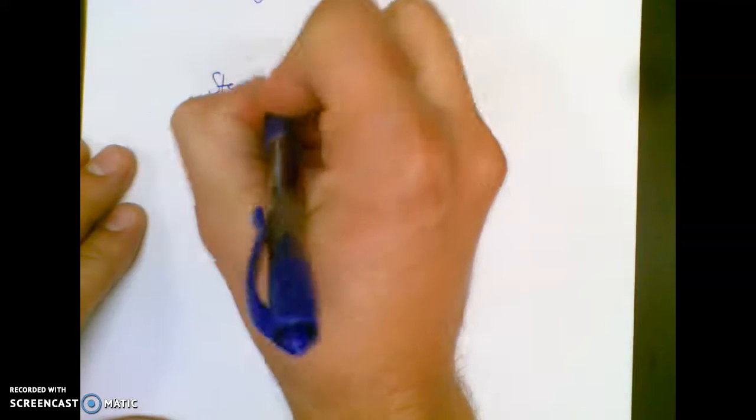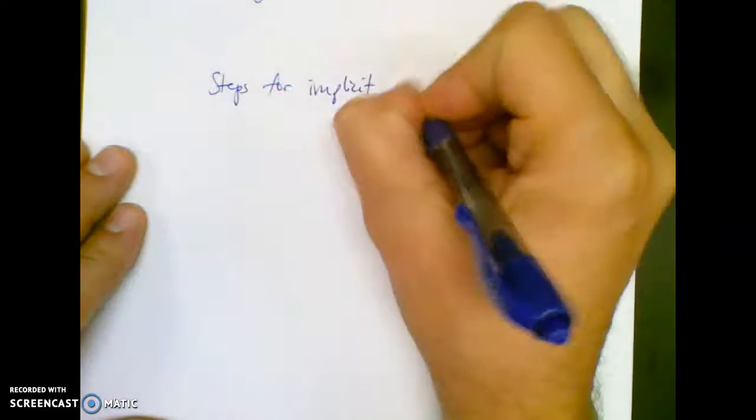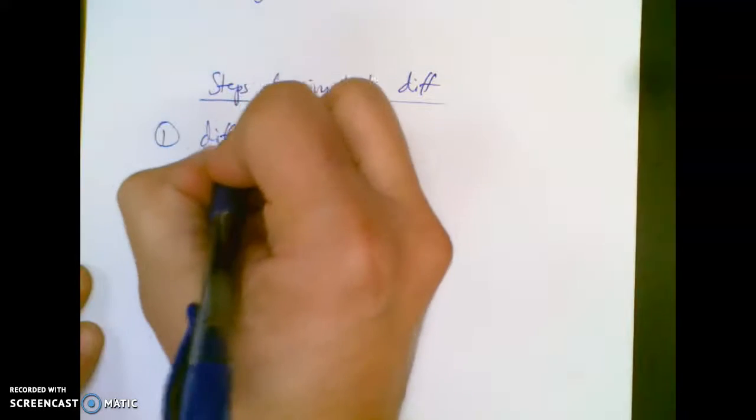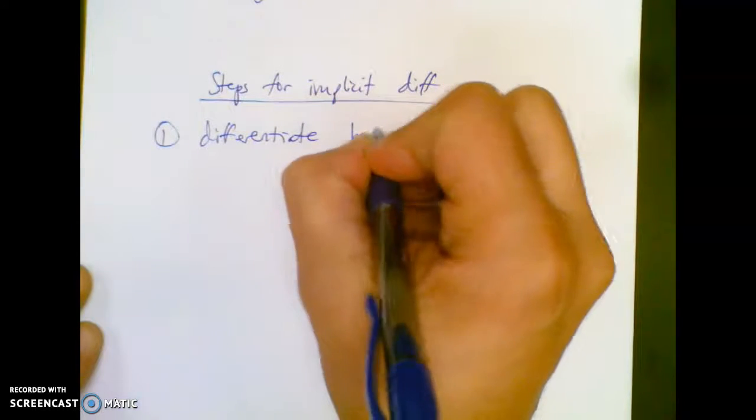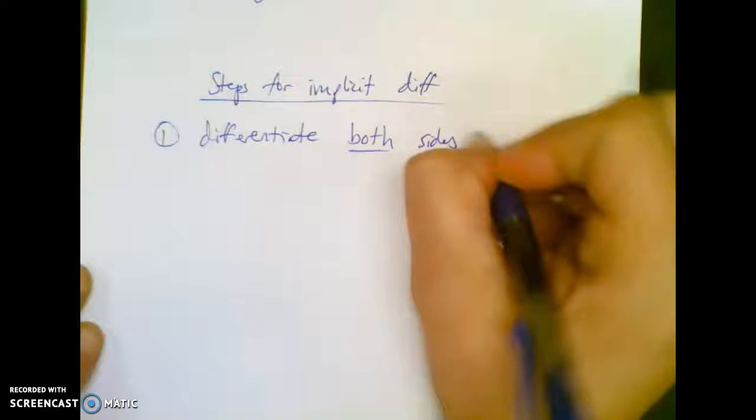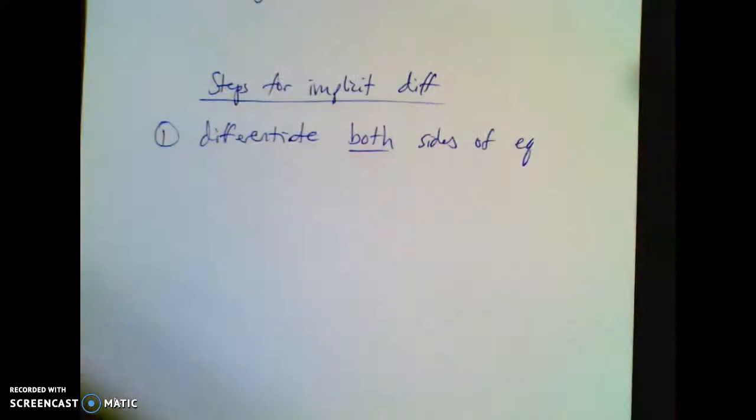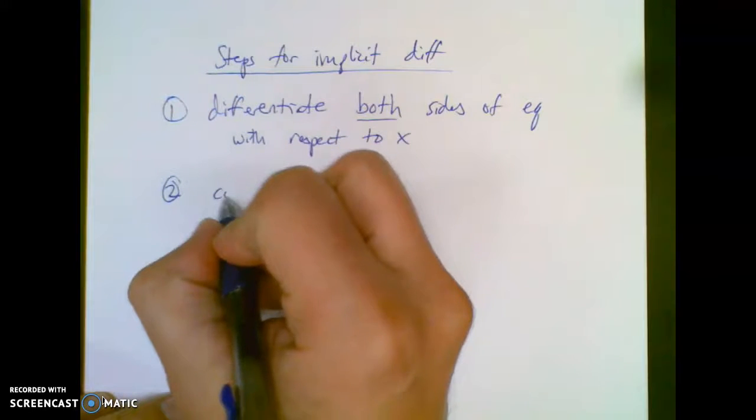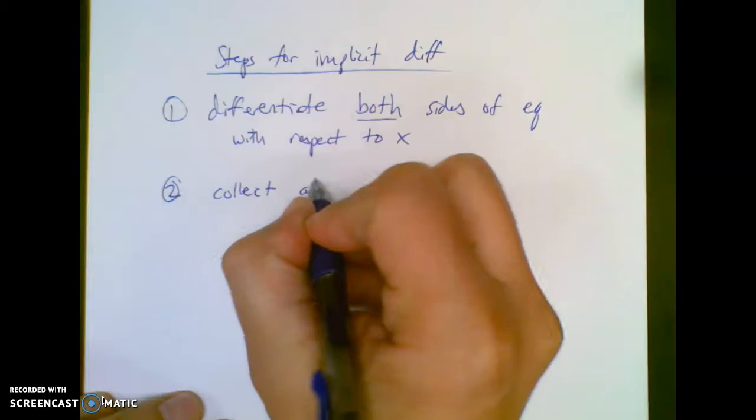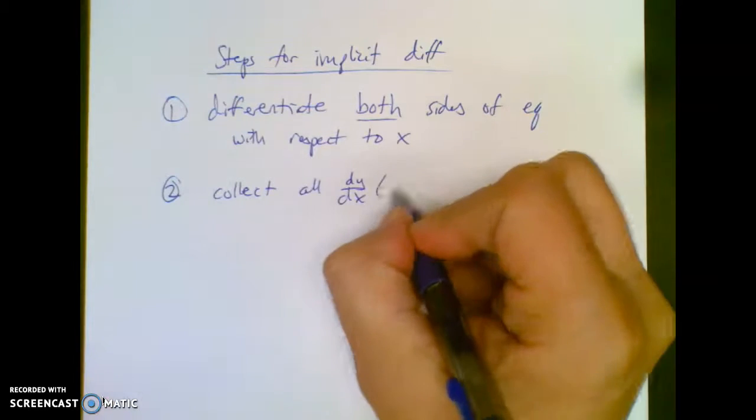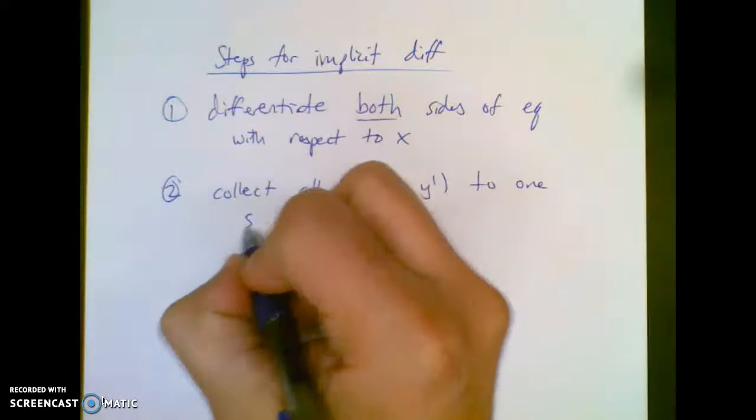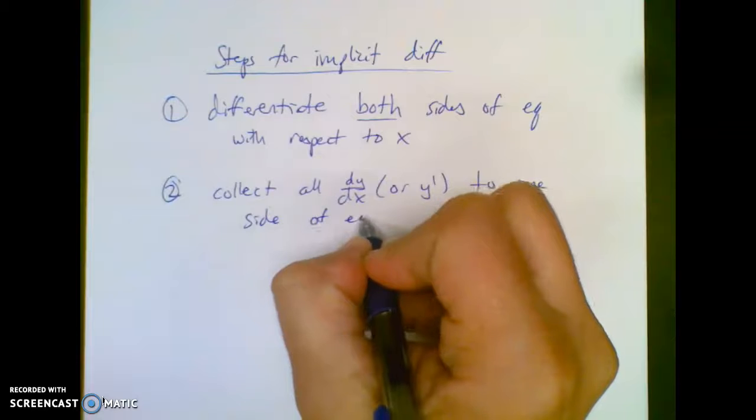All right. So why don't you write down, here's our general steps for implicit differentiation. And then we'll do a couple. Here's our steps. One, differentiate both sides of an equation with respect to x. And then two is collect all the dy/dx's, or y primes, if you like doing it the shorter way, to one side of the equation.